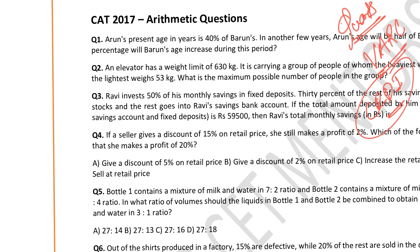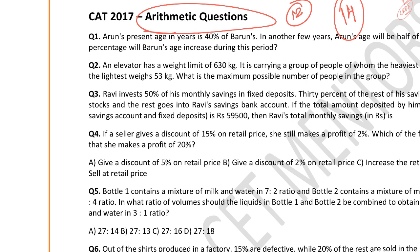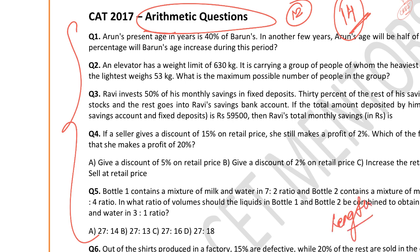Right in front of you, you have the 2017 paper. I've taken arithmetic questions - in 2017, arithmetic had around 12 questions, and in 2018, around 14 questions. When you go for level of difficulty, look at question number one: 'Arun's present age in years is 40% of Barun's age.' The first thing to understand is the length of the question. The length is pretty small - you won't be afraid of it.